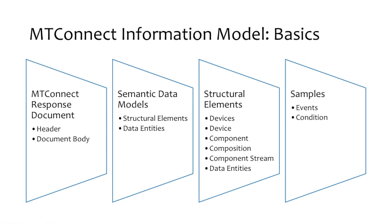The MT-Connect standard addresses two fundamentally distinct types of information related to manufacturing operations. The first is information directly associated with the operations and status of a piece of equipment. Discrete pieces of data typically represent this information. The information models defined in parts 2, 3, and 5 are used to describe this information. The second type represents MT-Connect assets, which are fundamental to the execution of manufacturing operations but are not directly associated with any one piece of equipment for their entire life cycle.